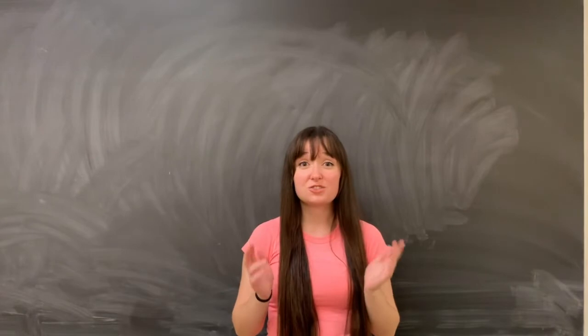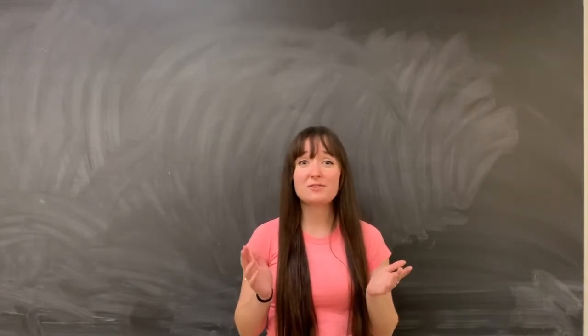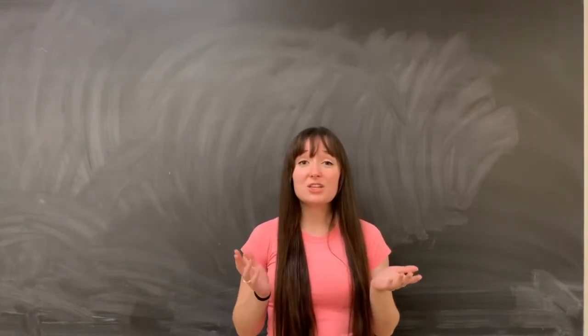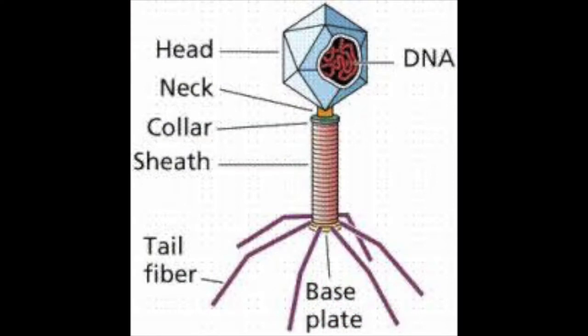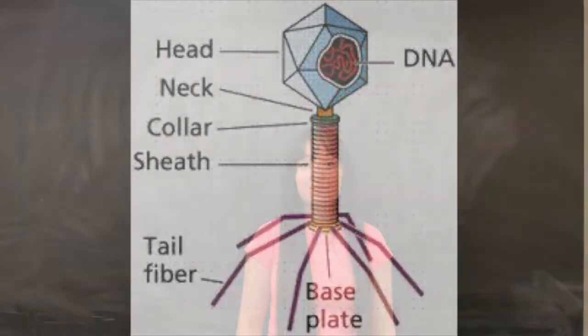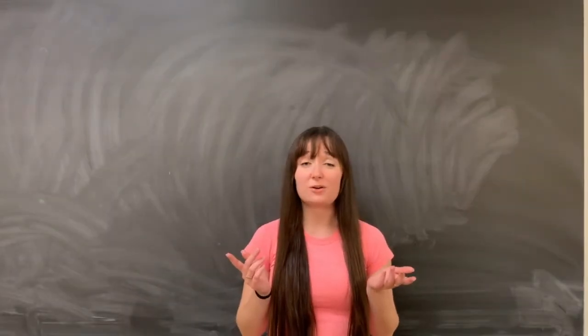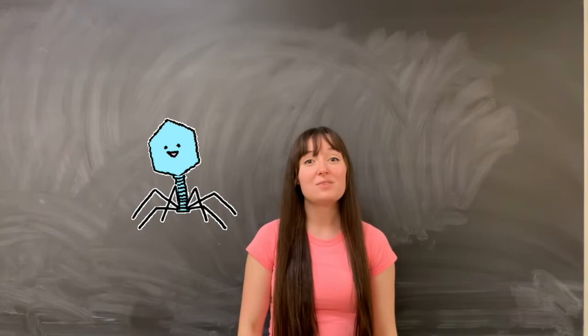Bacteriophages are such strange entities that they could be straight out of a sci-fi movie. They essentially look like alien spaceships, with a head containing their genetic information, and tail fibers which recognize receptors on their target bacteria. They're one of the deadliest entities on earth. But don't let this frighten you. They're on your side.